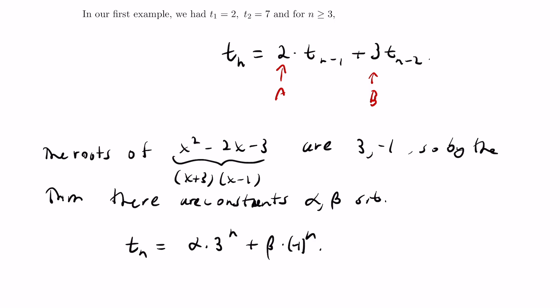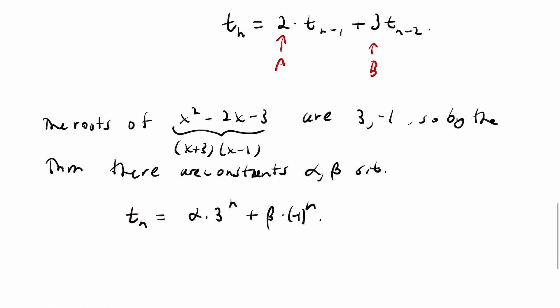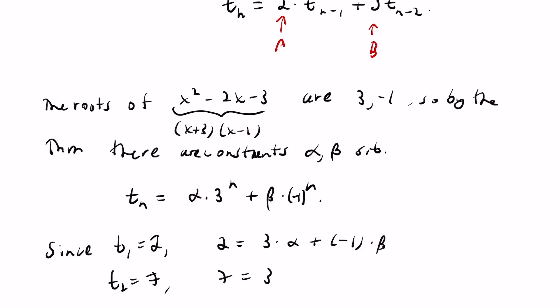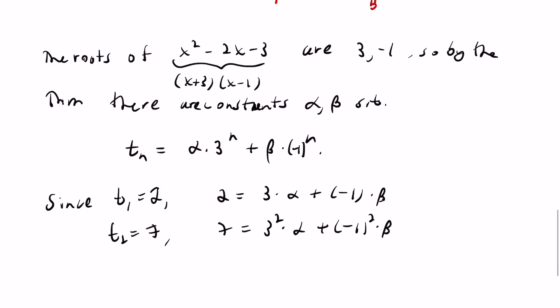So it seems like, at least right now, that this doesn't actually give you the explicit solution that you want. We have the initial conditions that t1 is 2 and t2 is 7, so we can use that to our advantage. Since t1 is 2, if we plug that in, we have 2 equals 3 times alpha plus negative 1 times beta. And since t2 is 7, we have 7 equals 3 squared times alpha plus negative 1 squared times beta. Now we can solve this system of equations for alpha and beta.